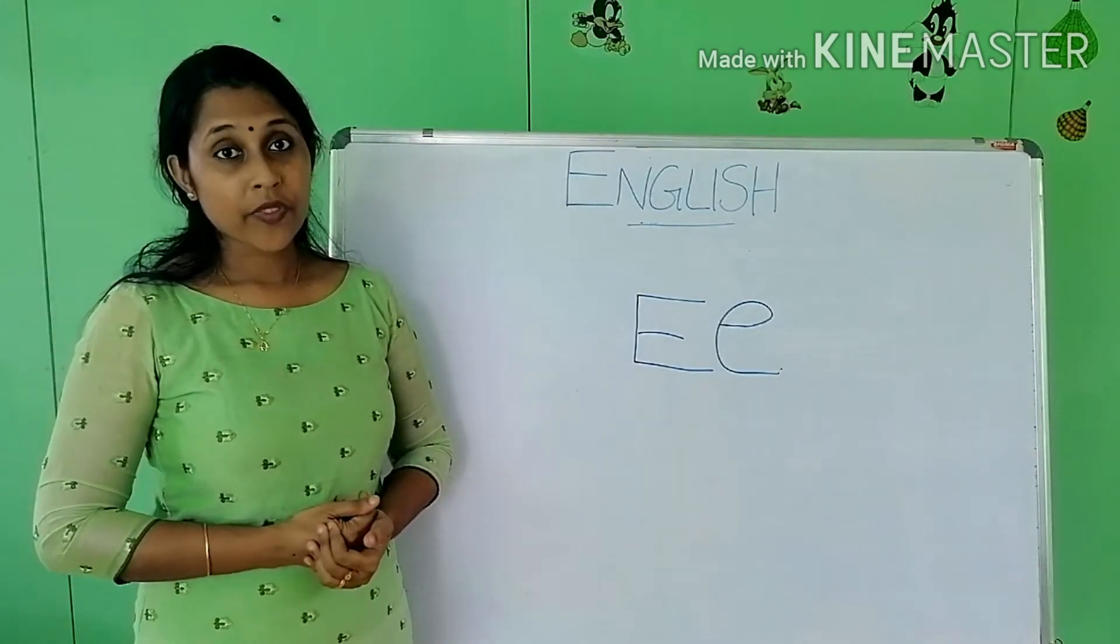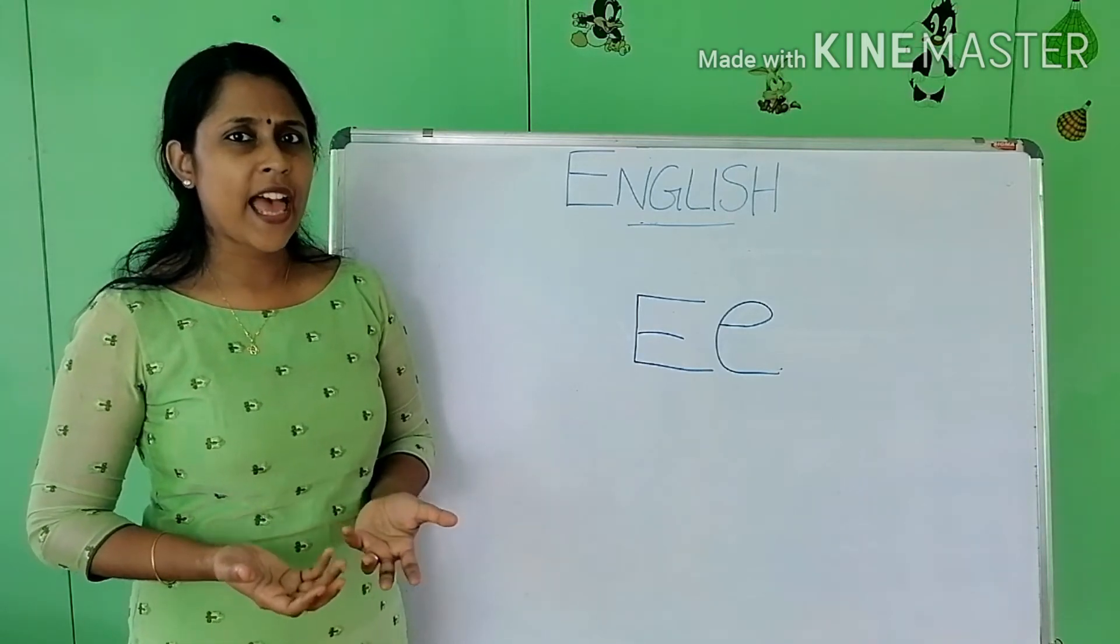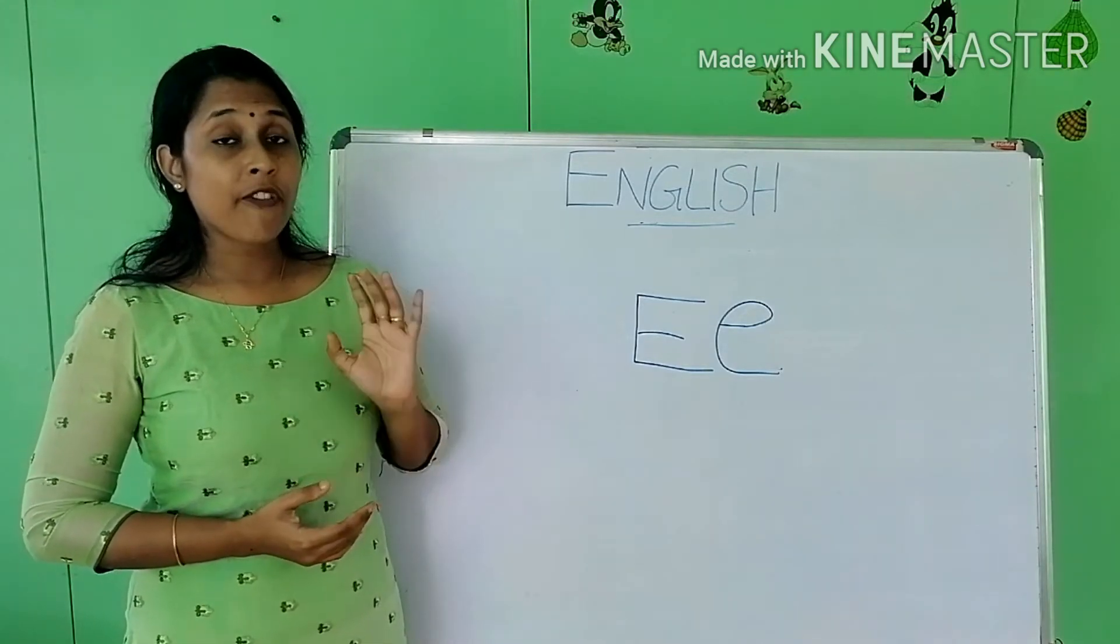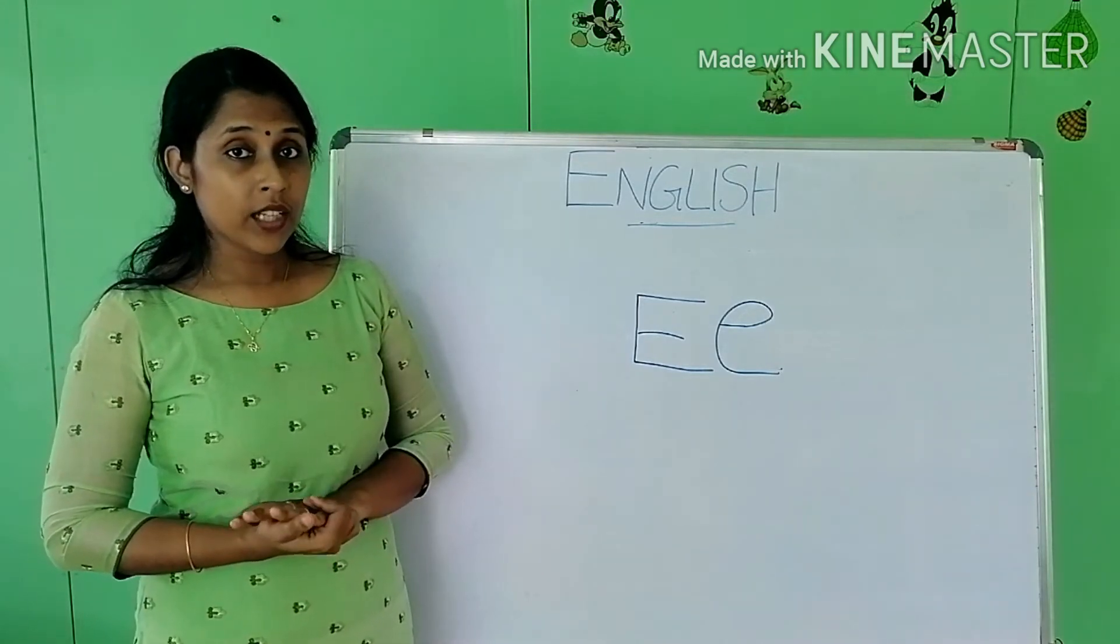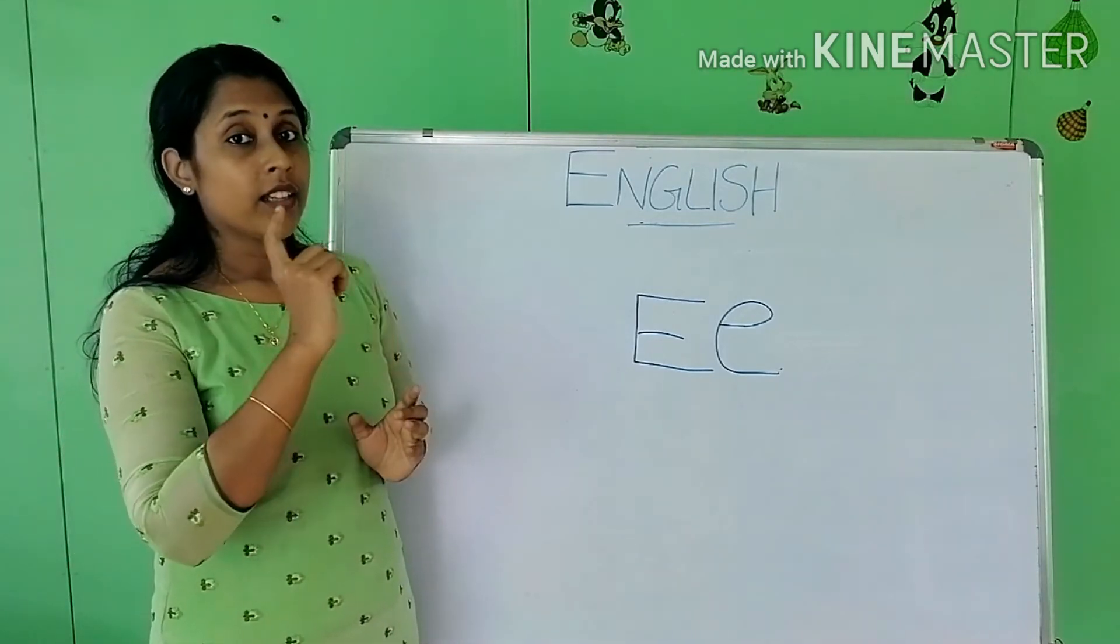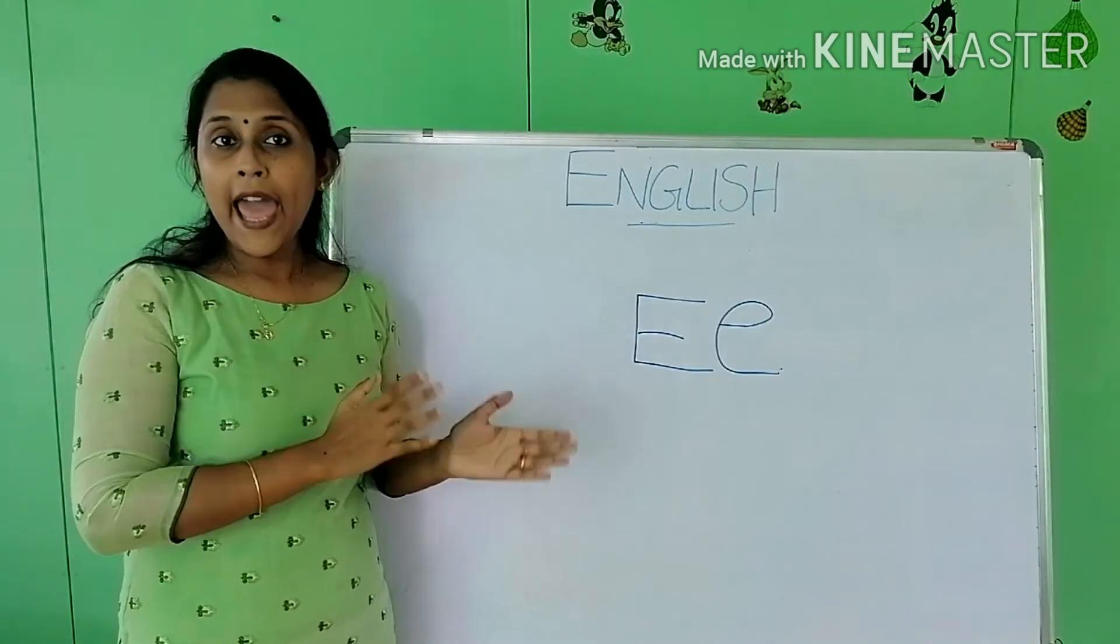E is egg. Egg. You all know what is an egg, right? So egg is the first word that starts with E. When we write egg, the first letter that comes is E. So E for egg.